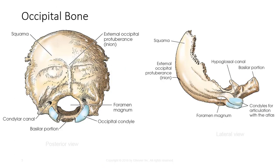The occipital bone is situated at the posterior inferior part of the cranium and forms the posterior half of the cranial base as well as the greater portion of the posterior cranial fossa. It consists of four parts: the squama, two occipital condyles, and a basilar portion. The foramen magnum is the large opening through which the medulla oblongata passes and exits the cranium. The external occipital protuberance, also called the inion, is a prominent process on the squama that corresponds to the internal occipital protuberance. Occipital condyles project anteriorly from each side of the squama and fuse at the basilar portion to complete the foramen magnum.